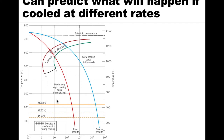The slow cooling path, sometimes called a full anneal, cools continuously below the eutectoid, starts forming pearlite, and finishes forming pearlite at close to 10² seconds. A moderately rapid cool — sometimes called normalizing — still falls in the pearlite region but transforms faster, finishing in about 10 seconds at around 550°C.